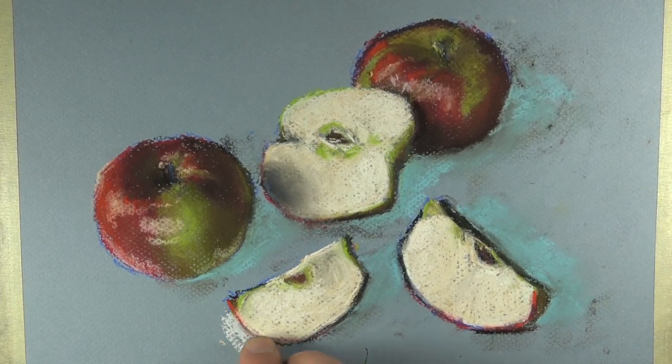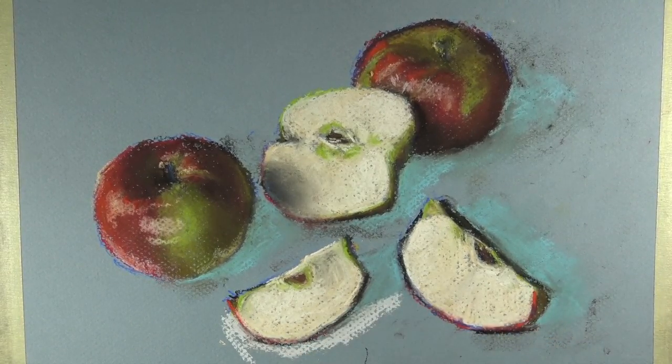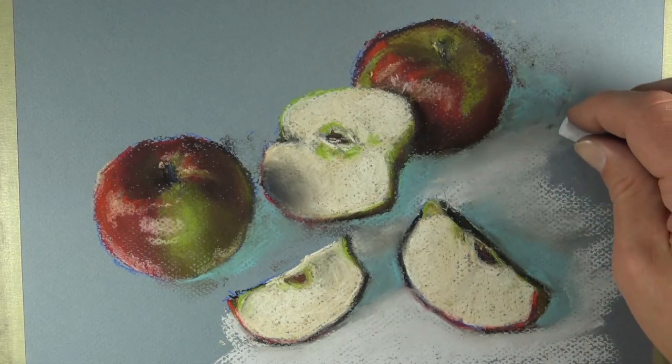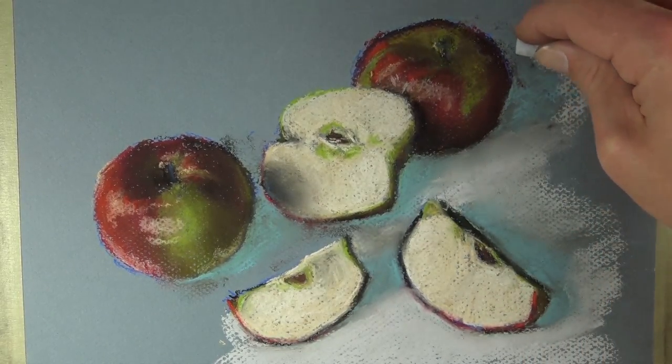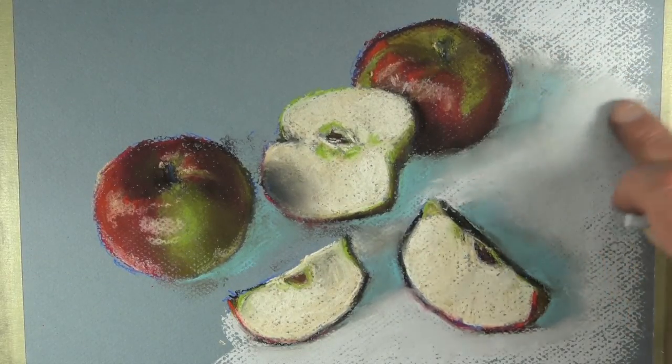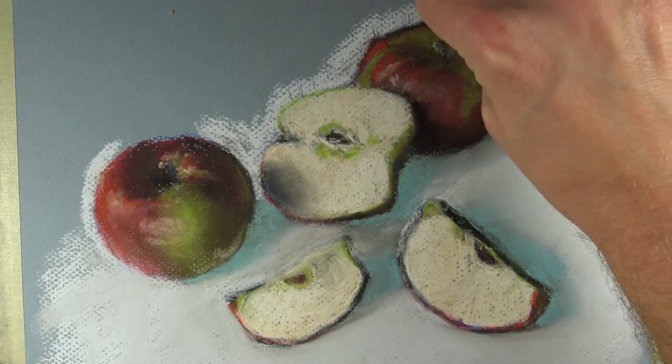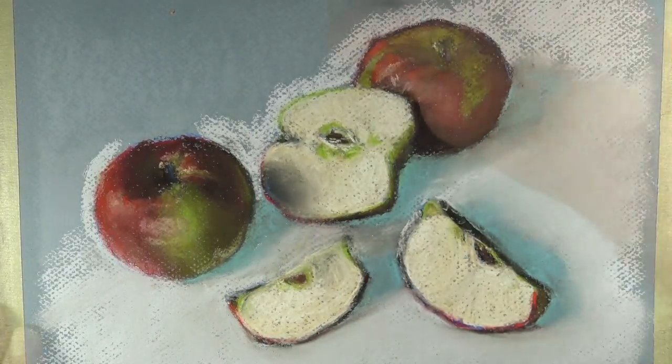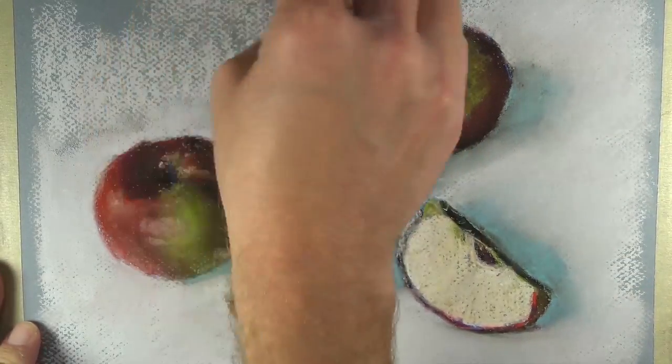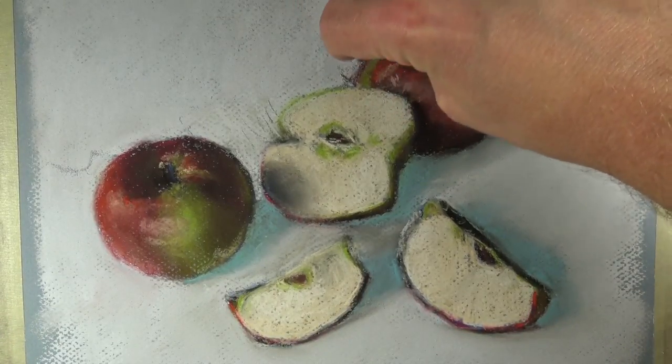We'll darken up some of the tones in a moment. But before we do that, we'll establish the color of the surface of the table. For this, we'll use a very, very light blue. This might almost look like it's white, but it has just a touch of blue in it as well. And of course, as we do so, we can clean up the edges around each one of the apples, basically defining them in space. So instead of using our initial marks to establish the edges of the apples, we're actually using the background applications to establish these edges. And you'll notice when we do this, the drawing starts to become a little bit cleaner and less messy.